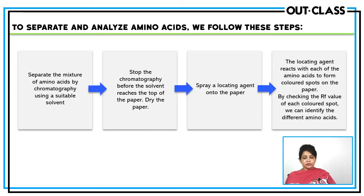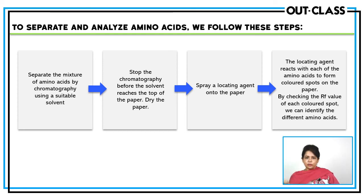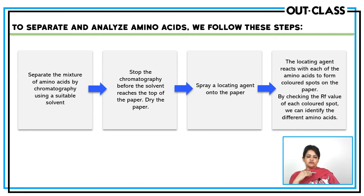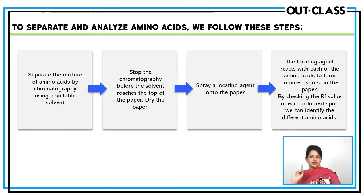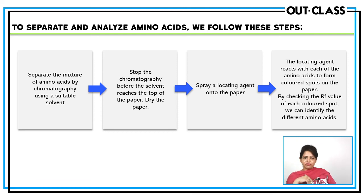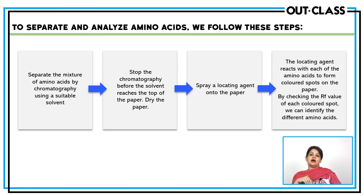This is done especially to separate mixtures of amino acids, which are white solids forming colourless solutions. When the solvent reaches near the top of the chromatogram, we remove it and spray the locating agent. The spots become visible, and we can now calculate the RF value of each amino acid to identify which amino acids are present in a particular protein, using RF value data.